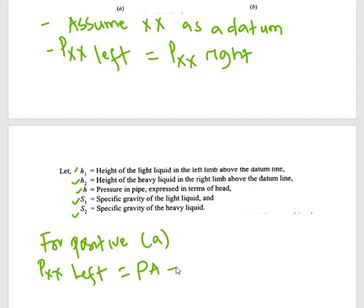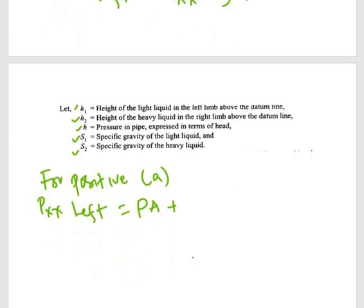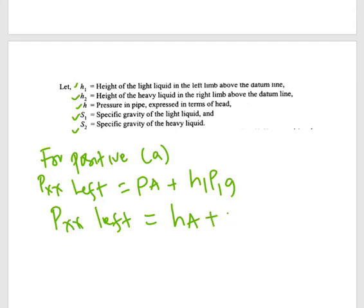Pressure at XX in the left limb is equal to P_A plus the pressure due to column height h1 of the fluid in the pipe whose pressure is to be determined — that is, P_A + h1·ρ1·g. Expressed in terms of head, pressure at XX in the left limb equals h_A + h1·s1 (where h1 is multiplied by its specific gravity). This is Equation 1.